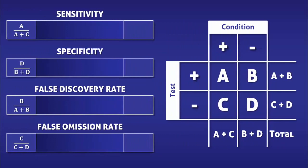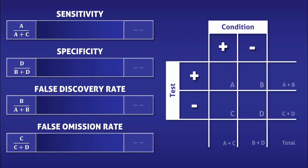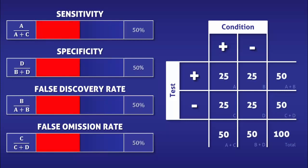We are going to compare these four measures of test performance by filling in a sample table and then making several adjustments to it. To begin with, we will use data that would be consistent with a coin toss, in which case the test would only have a 50% chance of being correct.